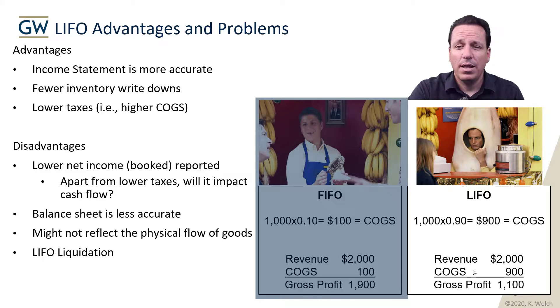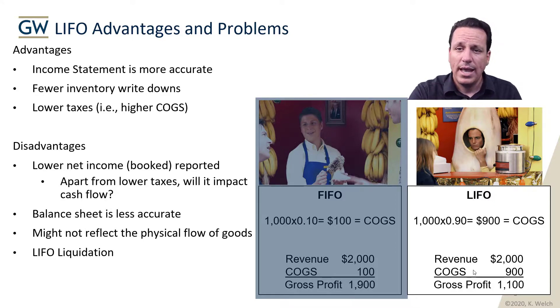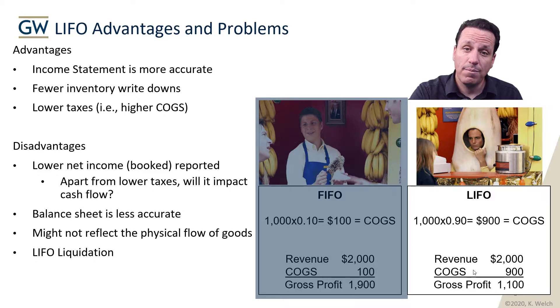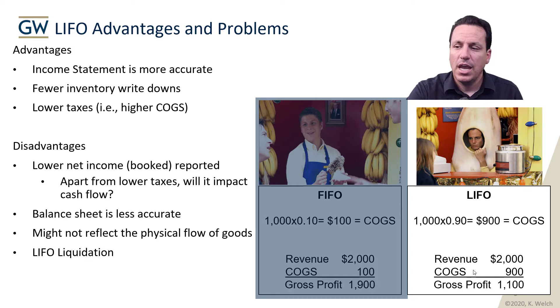There's also LIFO liquidation. When you liquidate all your LIFO inventory — meaning you sell through everything down to zero — your margins are going to be really high in that period because you're using old costing and old pricing. It's a disadvantage in the sense that it makes your income statement less accurate, but it is a tool that could be used for managing earnings. So it's an advantage slash disadvantage when it comes to LIFO liquidation. Those are the advantages and disadvantages of the different accounting for inventory reporting assumptions.